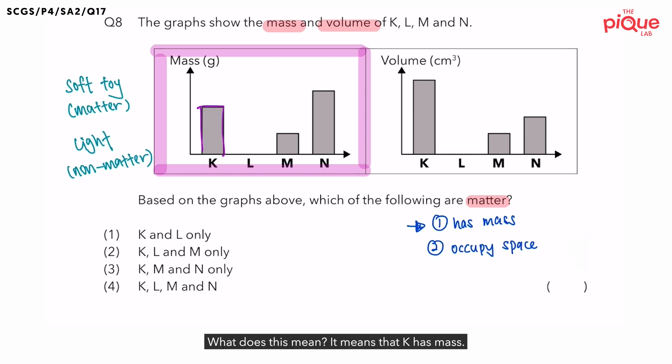But are you able to tell what is the mass of K? No. This is because there are no numbers written on the graph. But we know that if there is a bar, it means that K has mass.